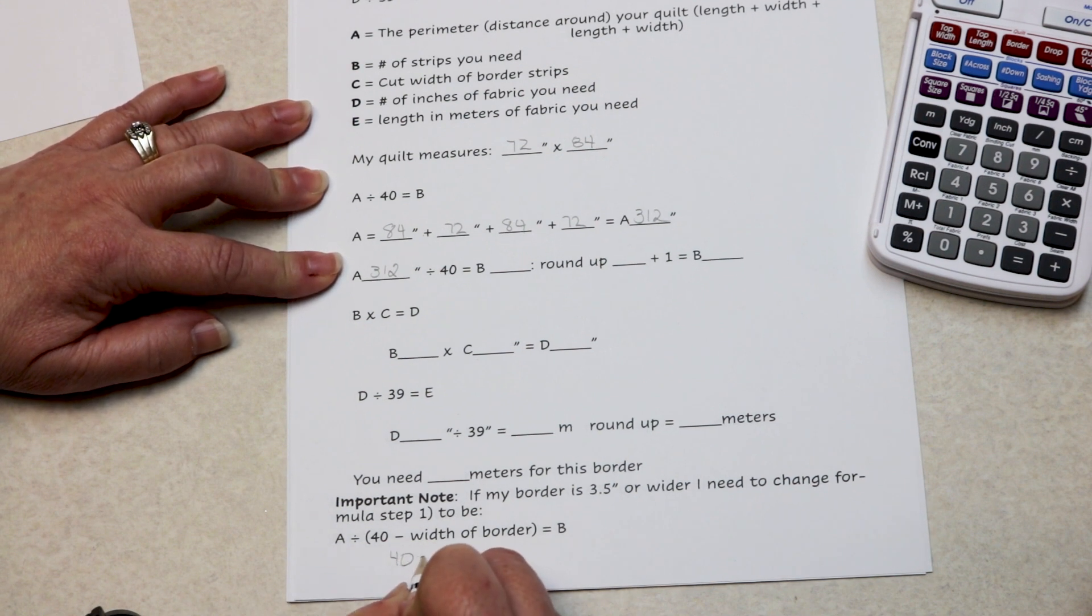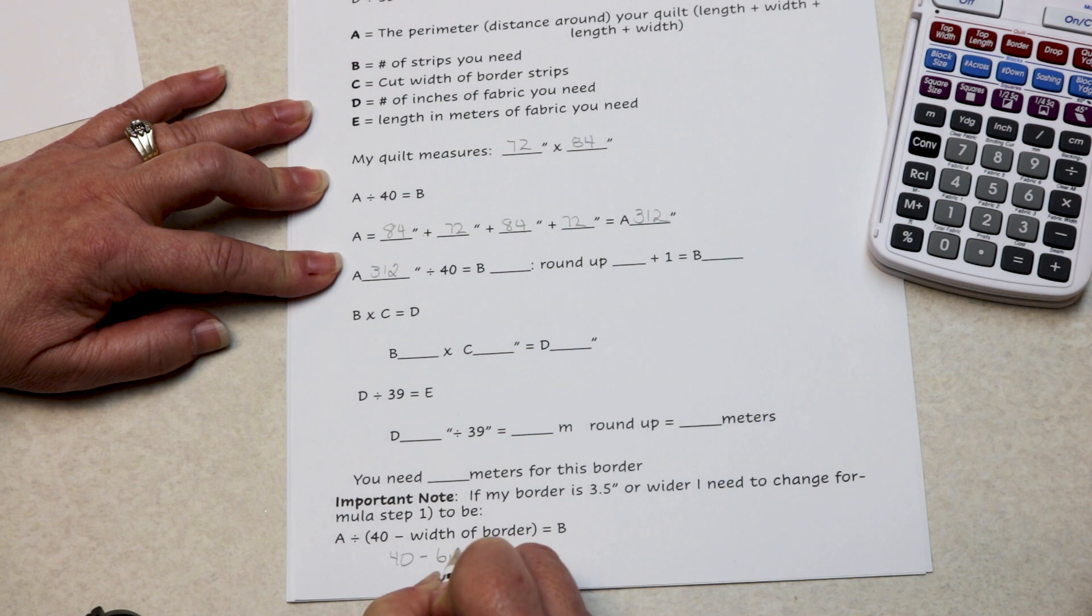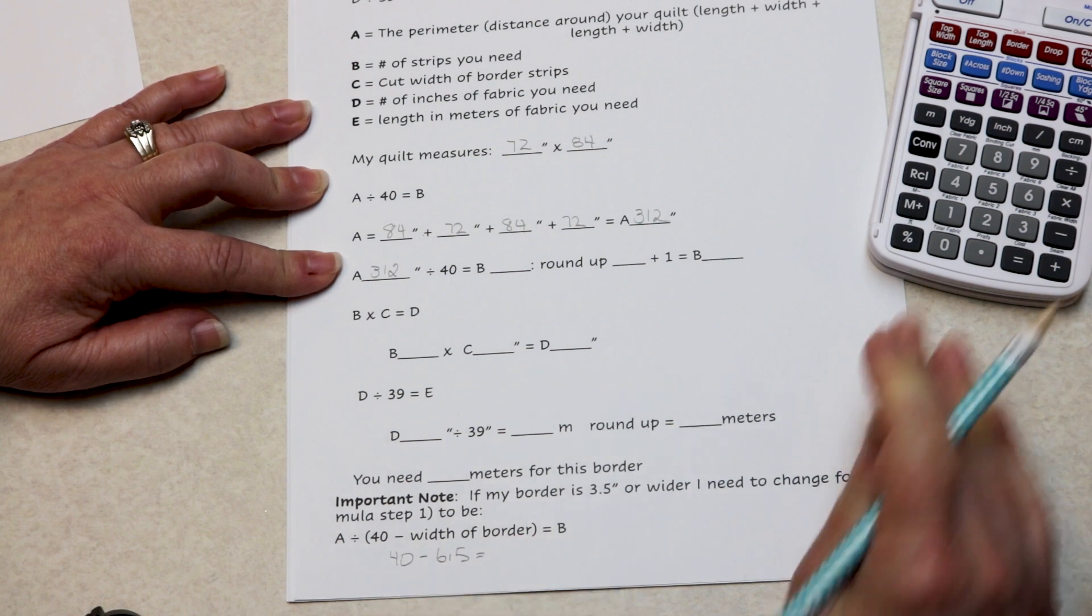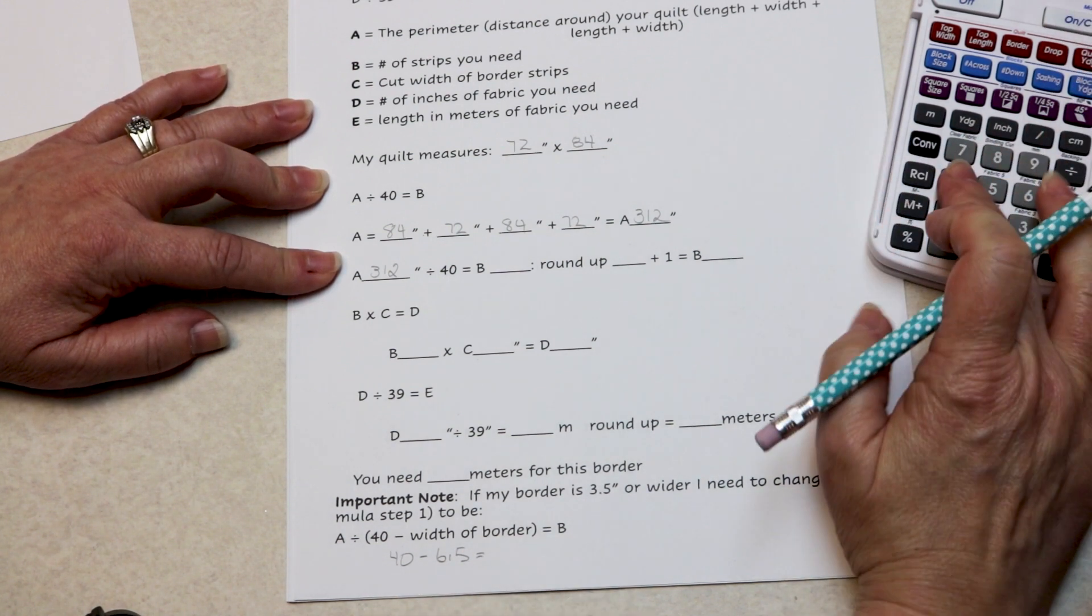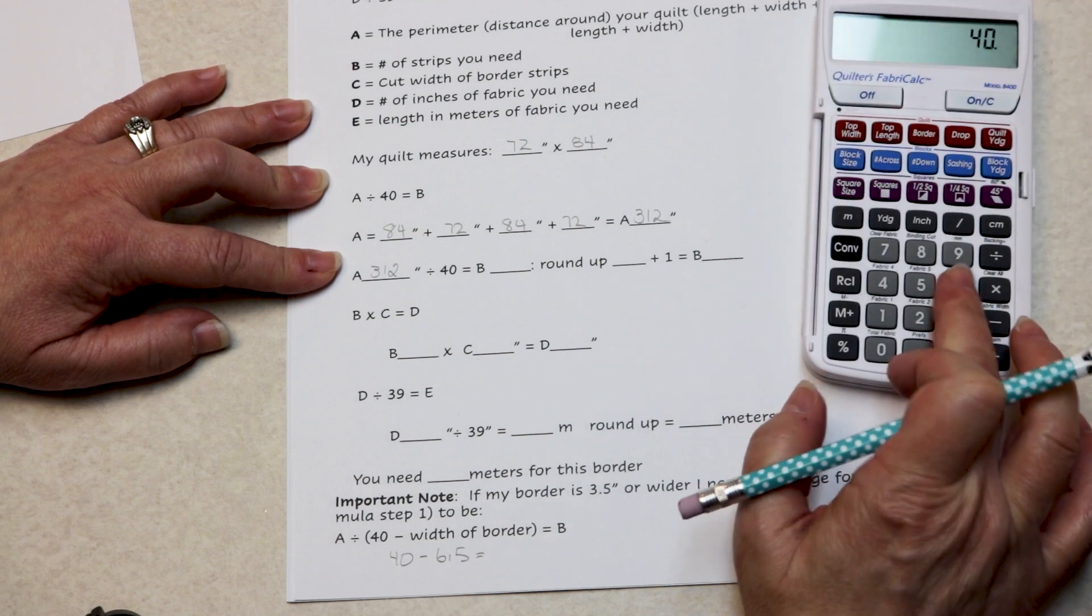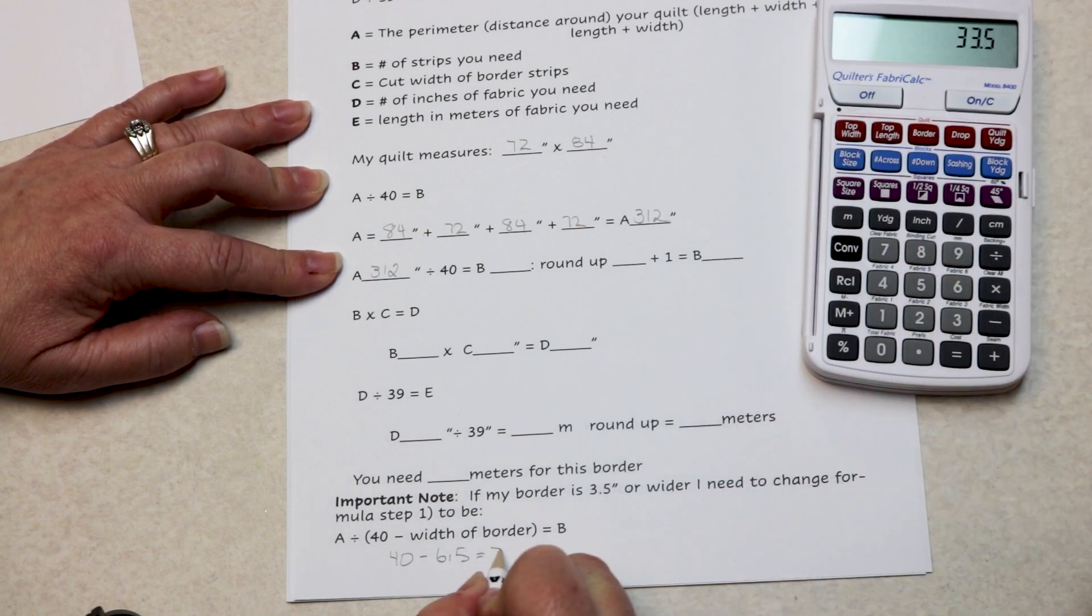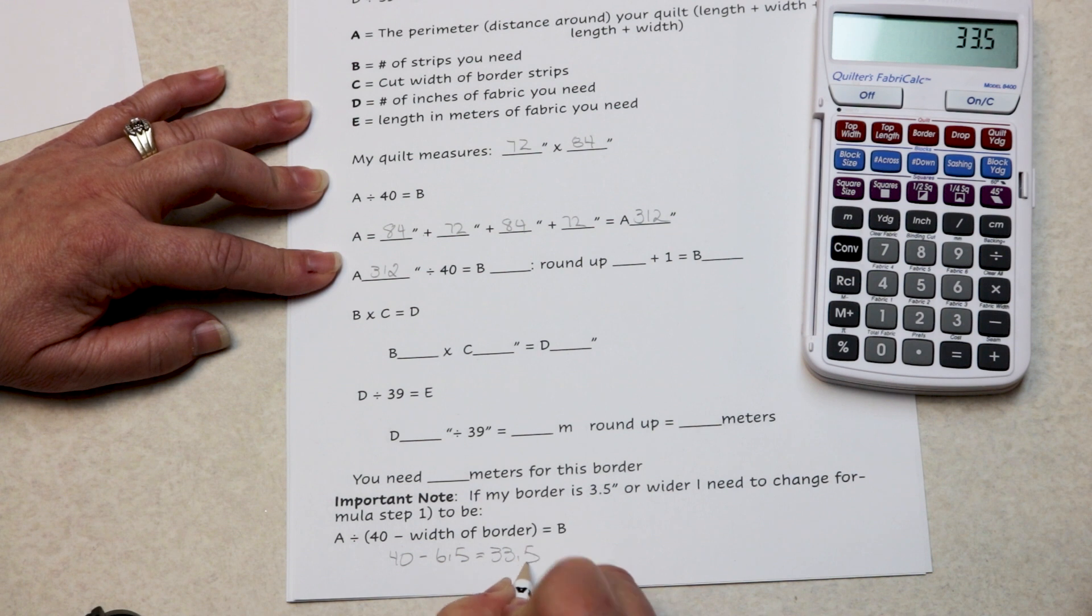40 minus 6.5 is 33 and a half inches. I only have 33 and a half inch usable on each strip.